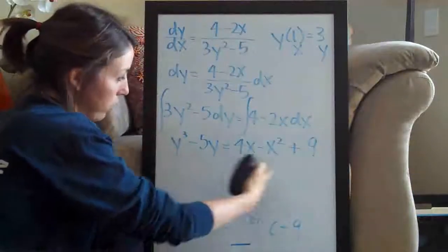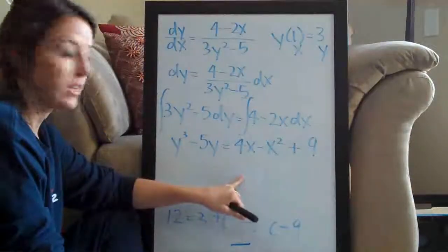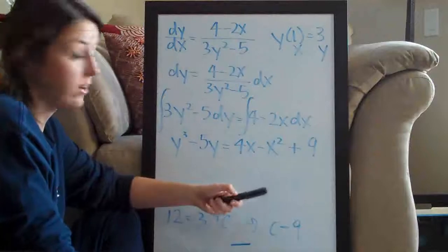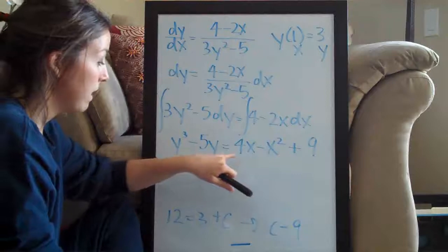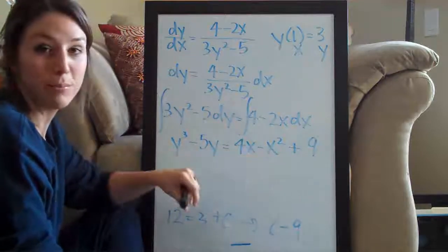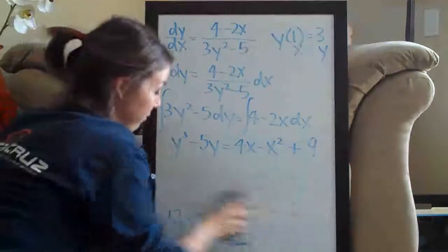So we're just going to go ahead and leave it like this. I'm not going to factor out a y or an x. I think it's just as simple to leave it like this. So the final answer is going to be y cubed minus 5y equals 4x minus x squared plus 9. That's your final answer.